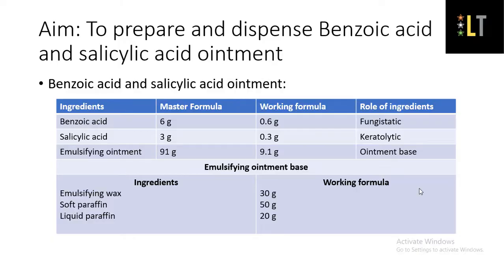First we will see the composition of emulsifying ointment base. It contains emulsifying wax around 30 grams, soft paraffin around 50 grams, and liquid paraffin around 20 grams. So the total weight of the emulsifying ointment base equals 100 grams.